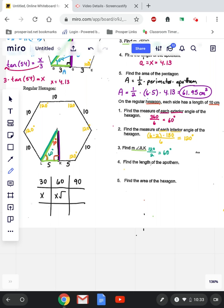And then the second row is X, X square root of 3, 2X. All right, the only side that we know to start off with is this 5.